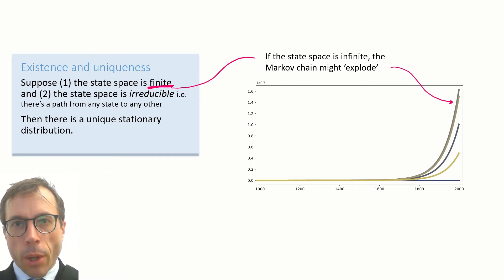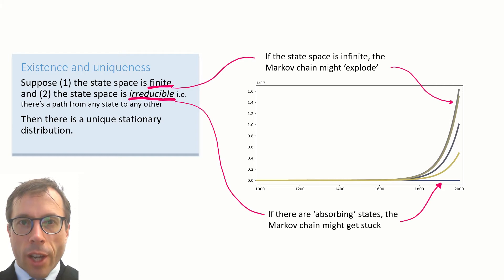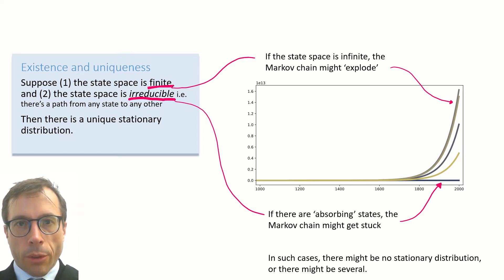And if the process explodes, a stationary distribution might not even exist. And what about the other condition about irreducibility? Irreducibility means there is a path from any state to any other. This epidemic model isn't irreducible because once we reach the state where zero people are infected, the infection is dead and so the Markov chain stays in state zero. You can see it here: the Markov chain might reach state zero and get stuck there. It's called an absorbing state, by the way. So these are two possible pathologies. In cases like this, the theorem just doesn't apply. There might be no stationary distribution or there might be multiple stationary distributions.